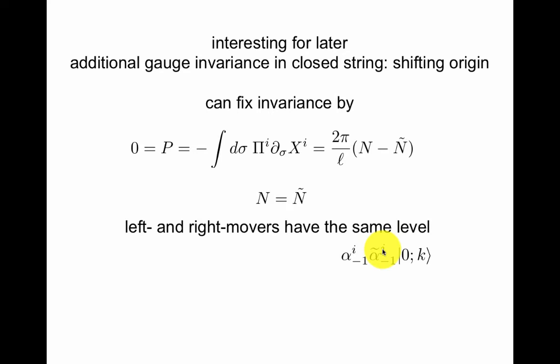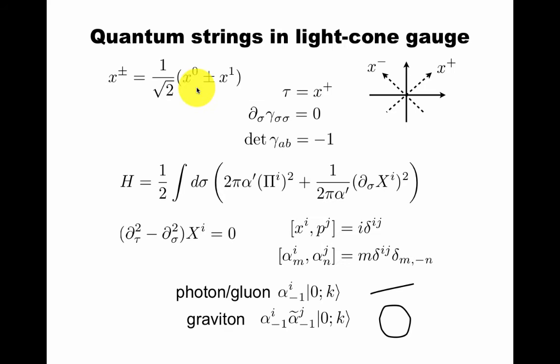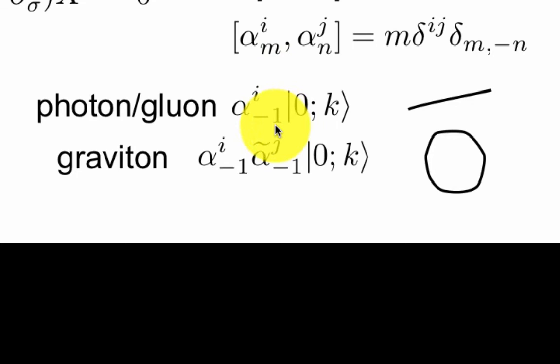To summarize, quantum strings in light cone gauge: you go to light cone coordinates. That allows you to fix these three conditions using the standard method from the Polyakov action, and get this Hamiltonian. So now you have d-2 massless scalars. The Hamiltonian equation of motion is a wave equation, can be easily solved given some boundary conditions, for example for an open string or for a closed string with periodic. You impose canonical quantization conditions at equal time. You get these mode relations, and then you can take these oscillators that look like harmonic oscillators. We have an infinite number of them indexed by an index m. The negative ones will be the creation operators. Positive ones will be the annihilation operators. So I put in my first creation operator, and I act on a state that has no oscillator, but k, center mass momentum.